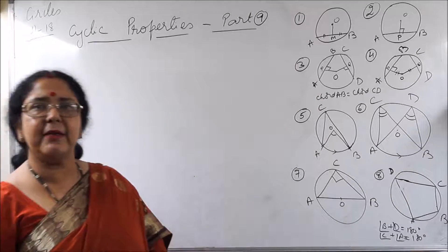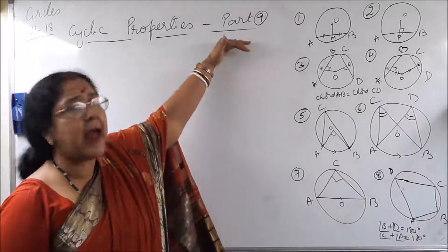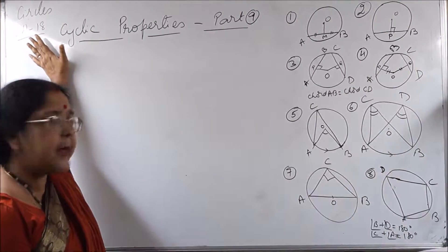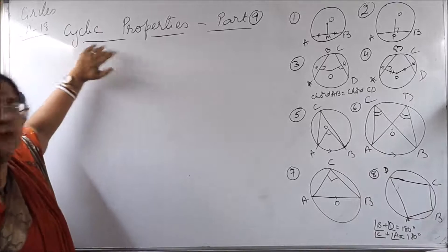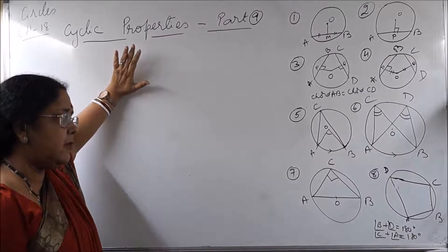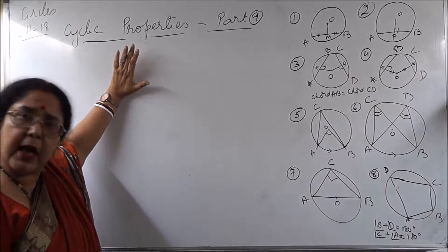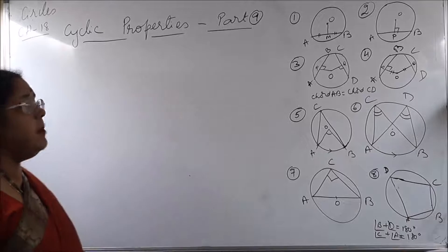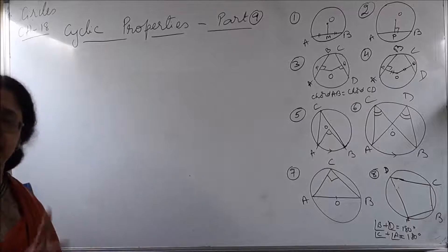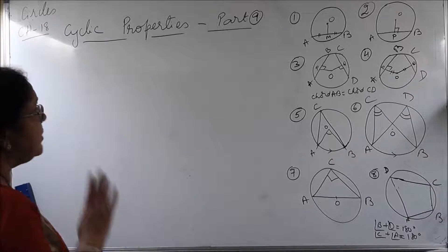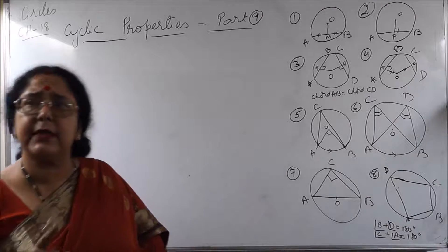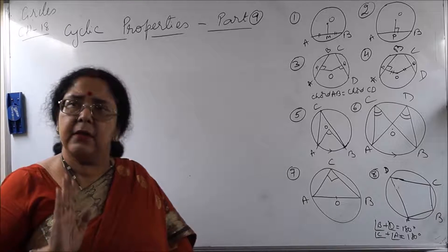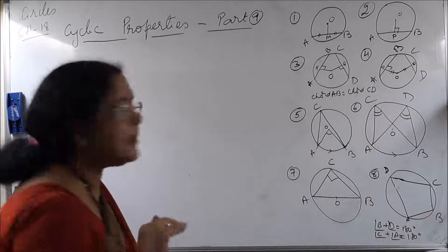Okay children, now I am again back with part 9 of cyclic properties of circle chapter. Under cyclic properties, we have done already one — that is, in a cyclic quadrilateral, the opposite angles are supplementary — which we finished in the previous part 8. Now we will be doing the other cyclic property. Let me remind you, these cyclic properties are very very important; at least one question based on the cyclic properties you can compulsorily expect in your board paper — that is the trend we have observed.